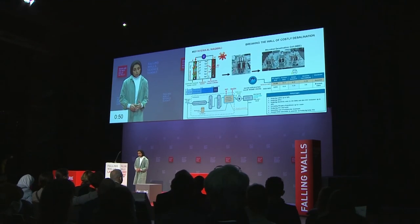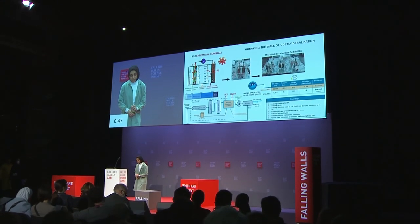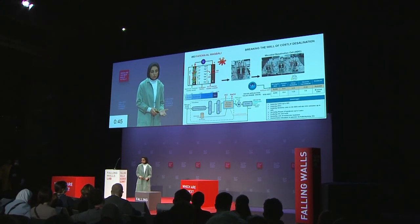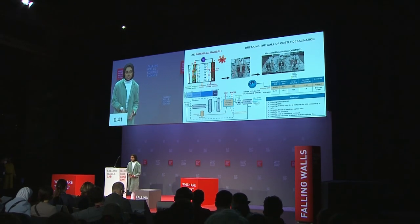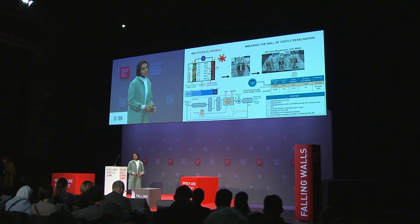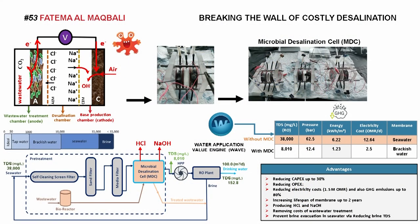To summarize the important advantages of this system: it can reduce capital expense by 30%, reduce operating expense by reducing electricity cost, and reduce greenhouse gas emissions by 80%. Just imagine saving 80% of the electricity bill in a desalination plant, and how we can invest such savings in improving the technology to the next level and provide affordable drinking water for everyone. Thank you.